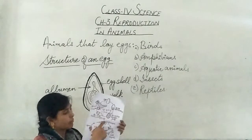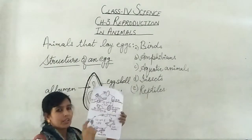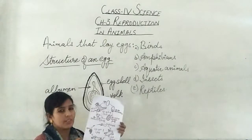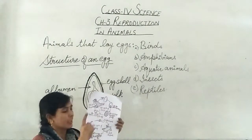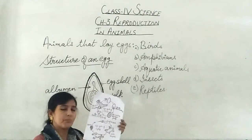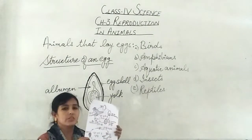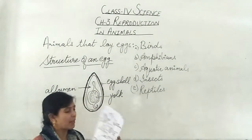All these stages from early tadpole to the adult frog is known as metamorphosis. From early tadpole to the adult frog, different structures have been modified. So this procedure is known as metamorphosis.